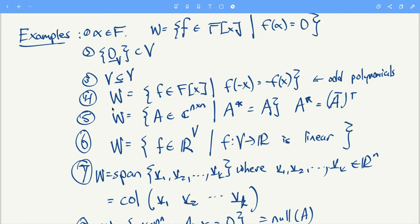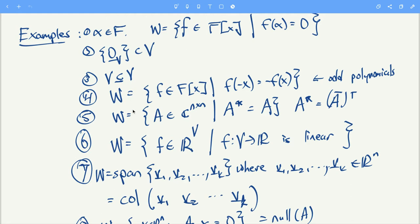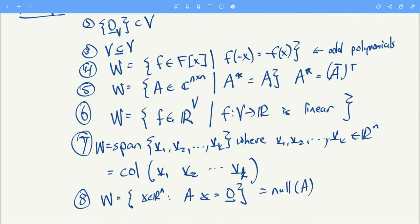Some more, some different examples. You could look at a subspace of polynomials where f of negative x equals negative f of x. That's the set of odd polynomials. You could look at the n by n matrices whose conjugate transpose is equal to itself.